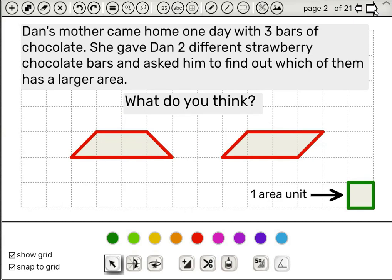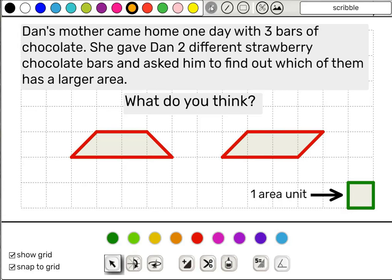Let's go ahead and start and read the story to the students. Dan's mother came home one day with three bars of chocolate. She gave Dan two different strawberry chocolate bars and asked him to find out which of them has a larger area. What do you think? Hold a discussion in class and see what the students think. They can use the scribble tool to express their ideas. For example, to cut this trapezoid here and here. And so we have a rectangle of 1 by 2 and two small triangles. The students will not need a general formula to calculate the area of this triangle. They can see that it's half of a square. So we have the area of 2 plus half plus half, which gives us 3.